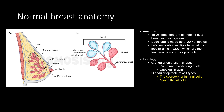Before we jump into the details of pathology, let's talk about normal breast anatomy. The breast is composed of 15 to 25 lobes connected by a branching duct system. Each lobe is made of about 20 to 40 lobules, and the lobules contain multiple terminal duct lobular units, which are the functional site of milk production.